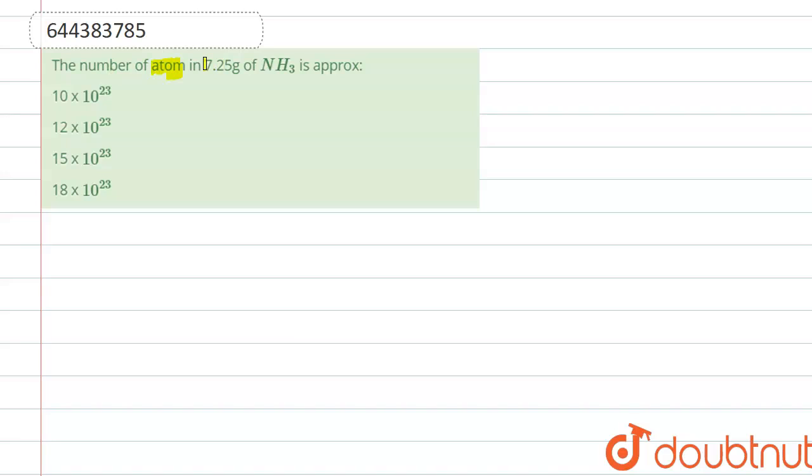Hello everyone, here the question is: the number of atoms in 7.25 grams of NH3 is approximately. So first we calculate the number of moles.